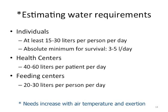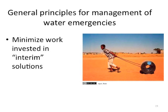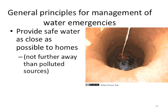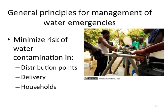Minimize work invested in interim solutions and try to look for permanent solutions. Provide safe water as close as possible to homes. Minimize the risk of water contamination at distribution points, during delivery, and in households. Provide safe storage at community and household levels.